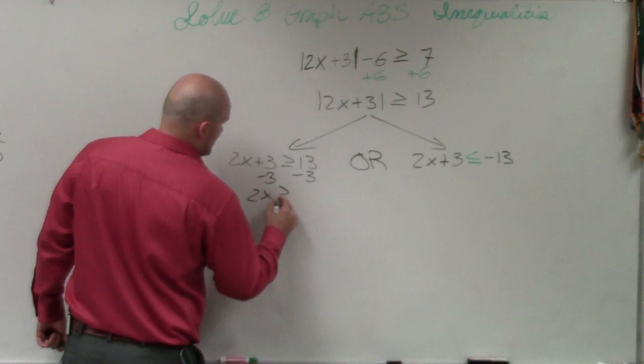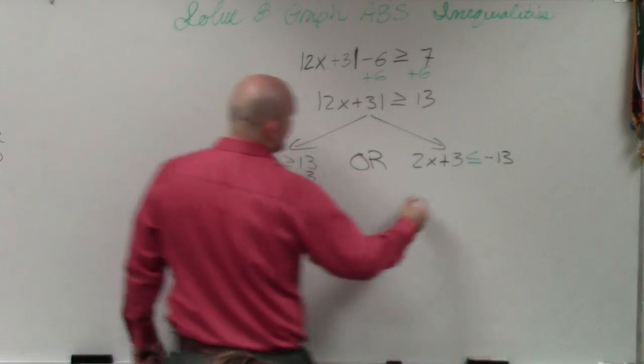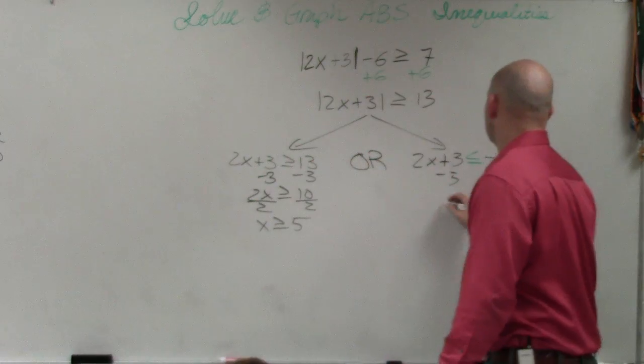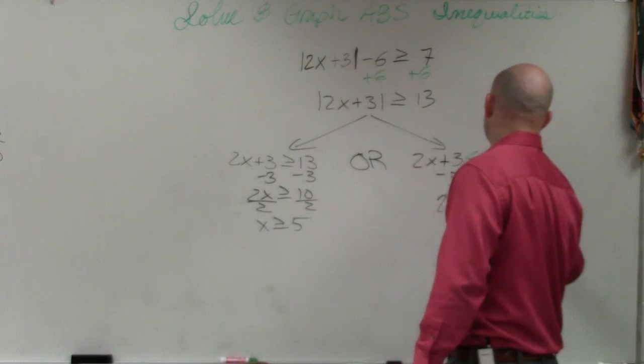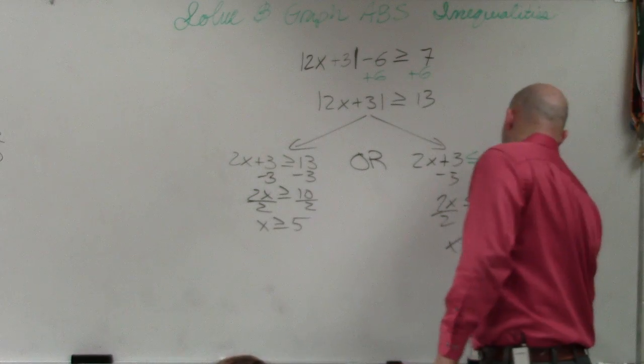So now I'll go ahead and solve. So I have 2x greater than or equal to 10, divided by 2, divided by 2. x is greater than or equal to 5. Minus 3, minus 3. 2x is less than or equal to negative 16, divided by 2, divided by 2. x is equal to negative 8.